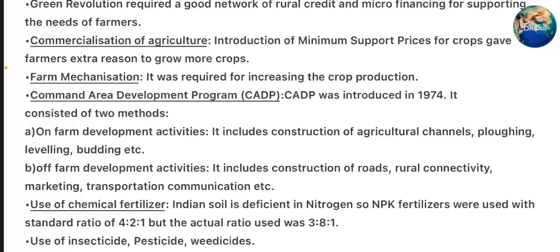Command Area Development Program (CIDP) was introduced in 1974. It consists of two methods: On-farm development activities, which include construction of agriculture channels, ploughing, levelling, bunding, etc. Off-farm development activities, which include construction of roads, rural electrification, marketing, transportation, communications, etc.